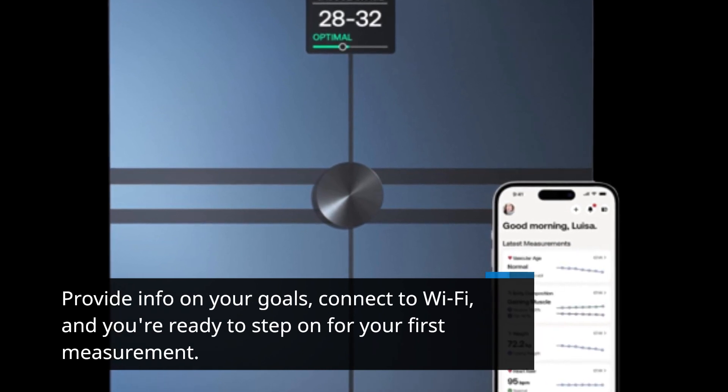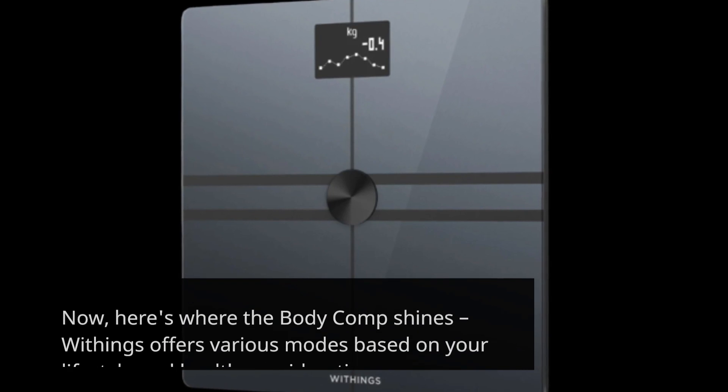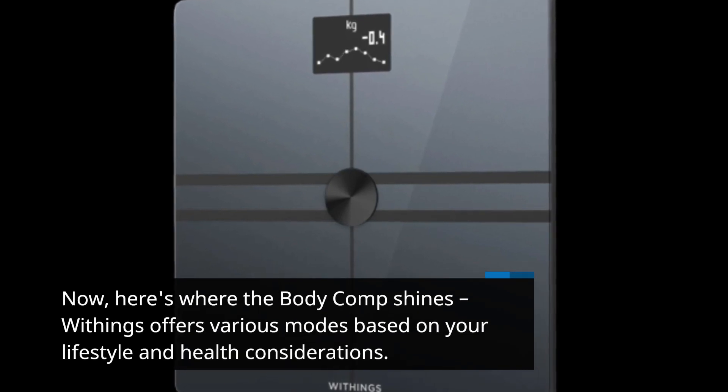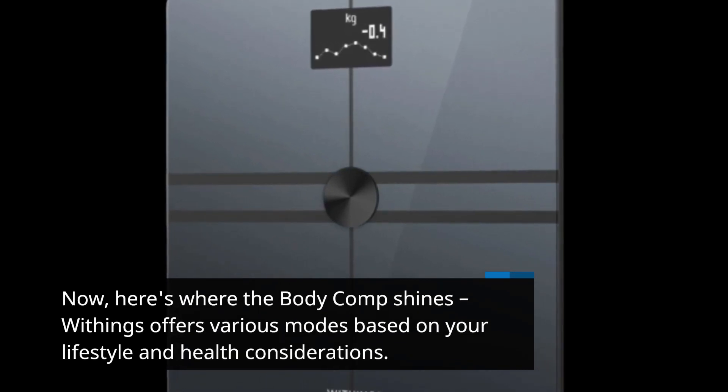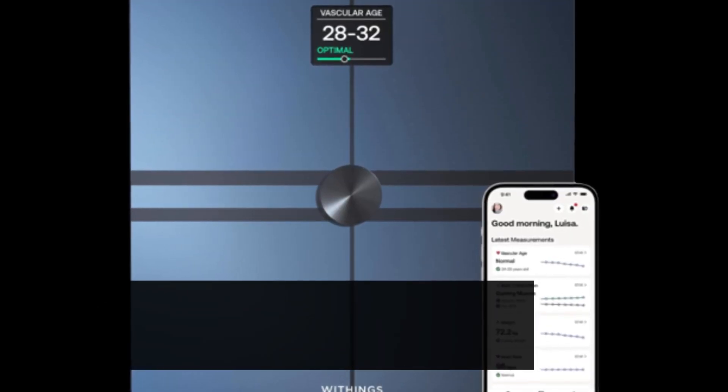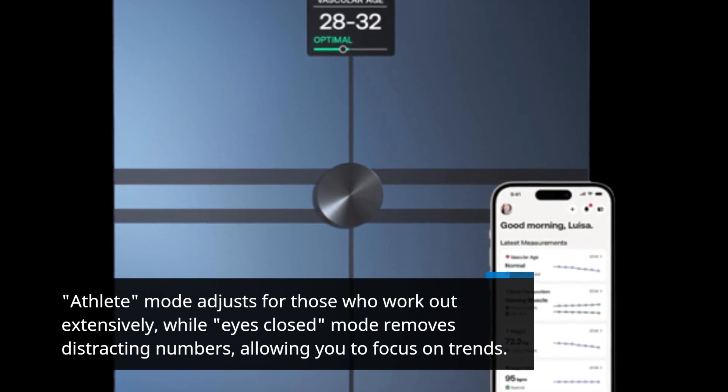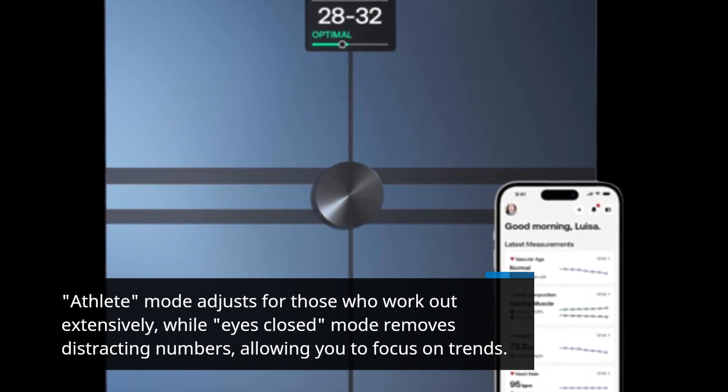Now here's where the Body Comp shines - Withings offers various modes based on your lifestyle and health considerations. Athlete mode adjusts for those who work out extensively, while Eyes Closed mode removes distracting numbers, allowing you to focus on trends.